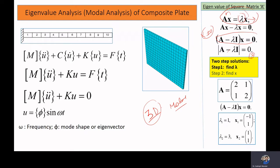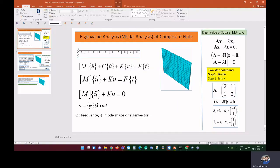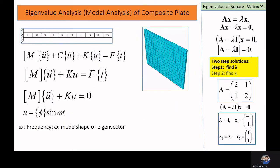First, we solve for the eigenvalue, then we substitute that eigenvalue back into the equations to get the eigenvector — that is our mode shape. Mode shapes indicate the shape in which a structure can bend easily. The first mode shape indicates the easiest way for the structure to bend.